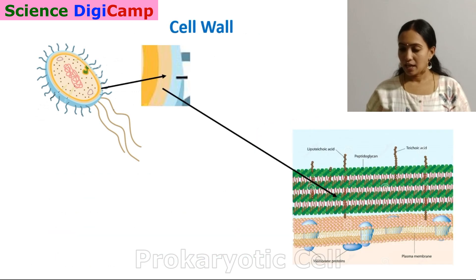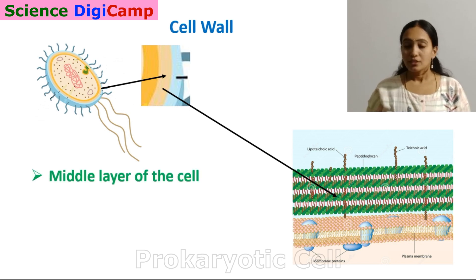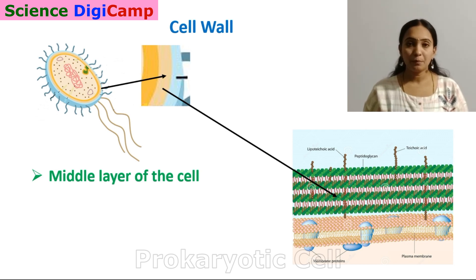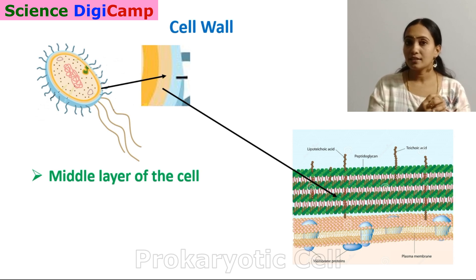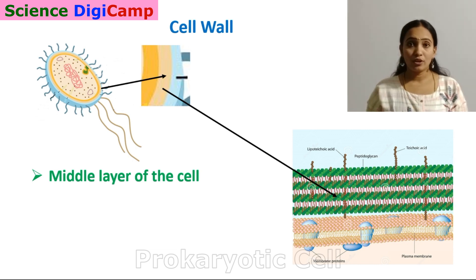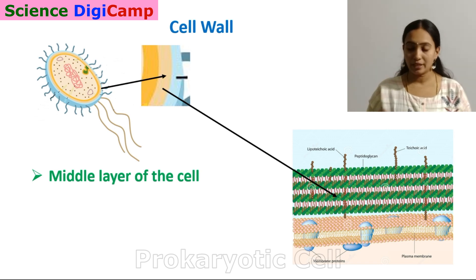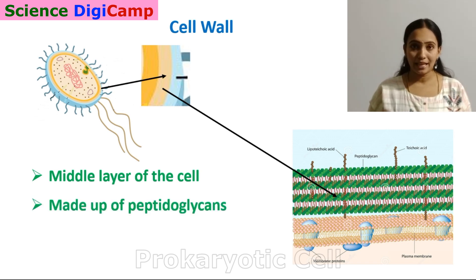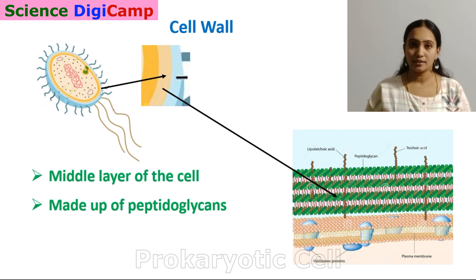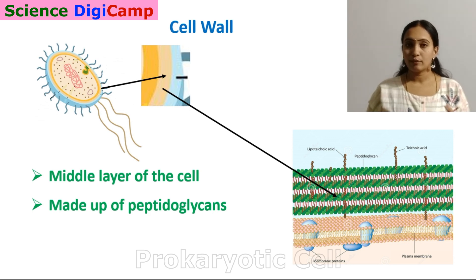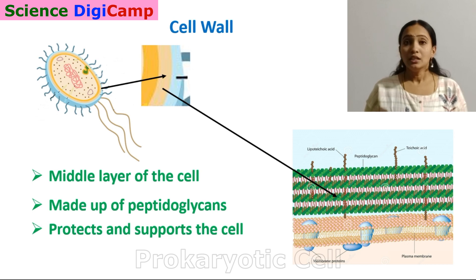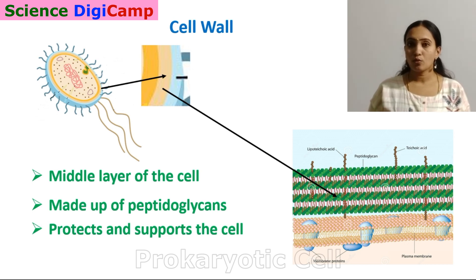Moving on to the next part — the cell wall. The cell wall acts like a wall for the cell, giving protection and support. It is the middle layer of the cell, located outside the plasma membrane. In prokaryotic cells, the cell wall is chemically complex, made up of peptidoglycans — combinations of sugars and amino acids — whereas in eukaryotic cells it is chemically simple. The cell wall protects and supports the cell and plays a key role in maintaining its shape and structure.